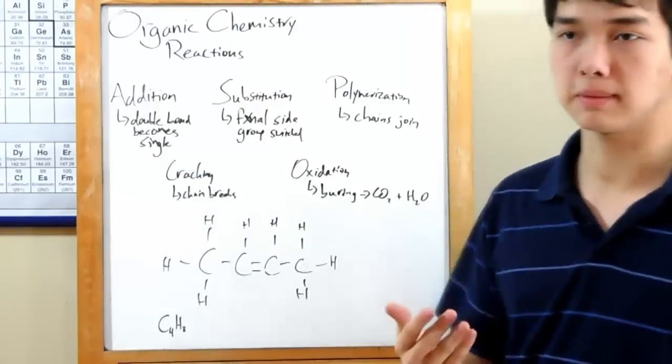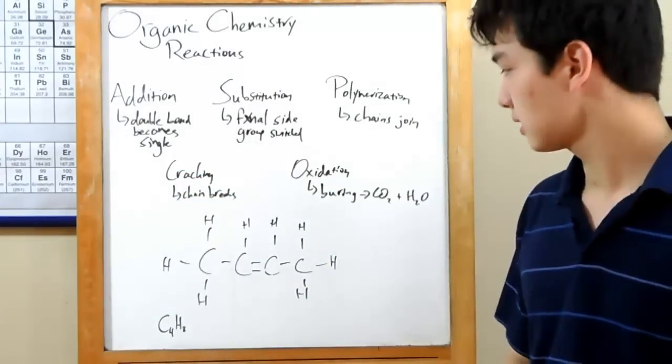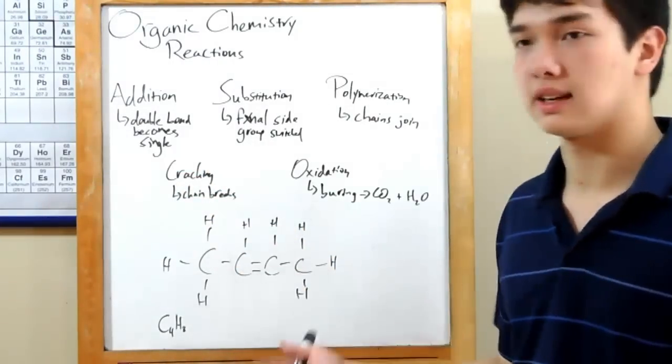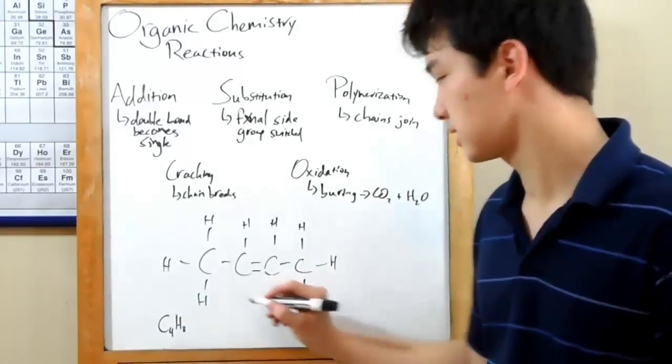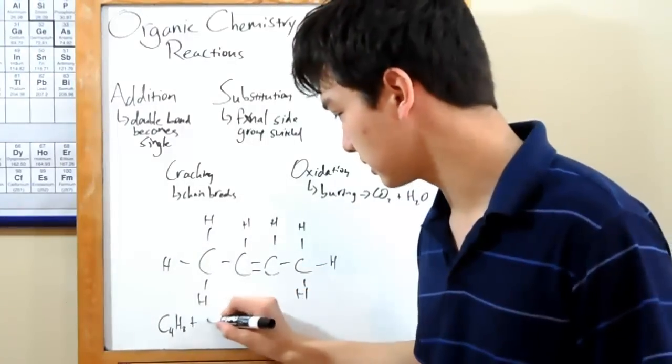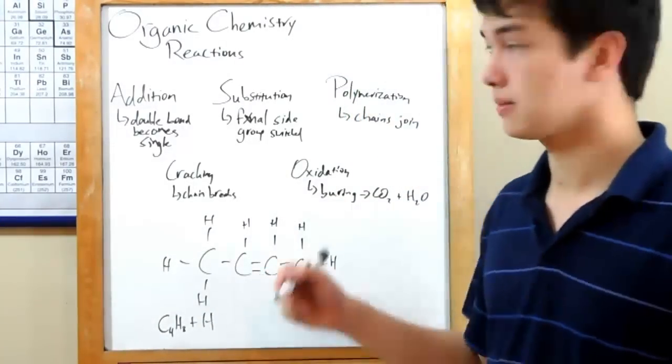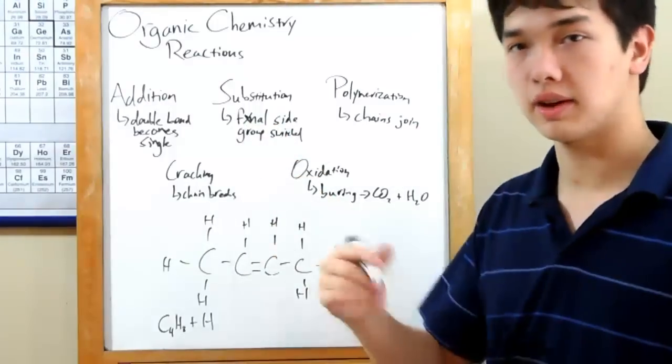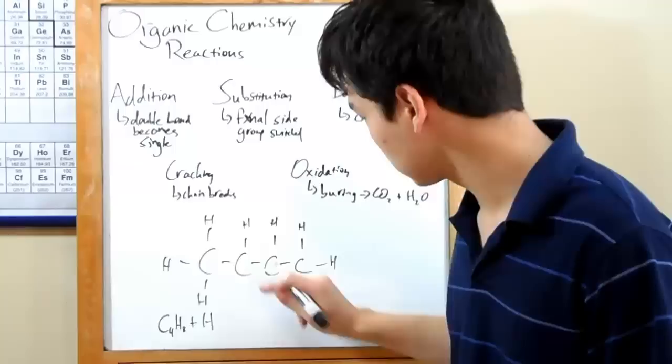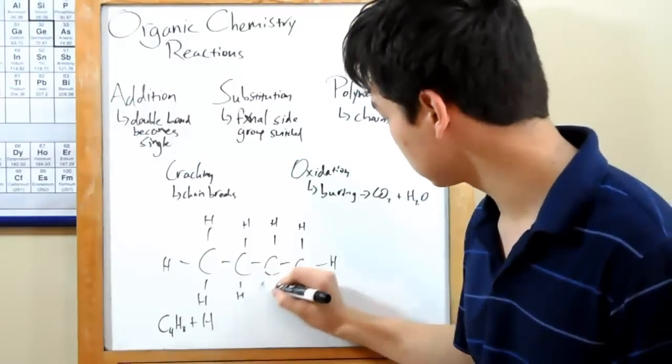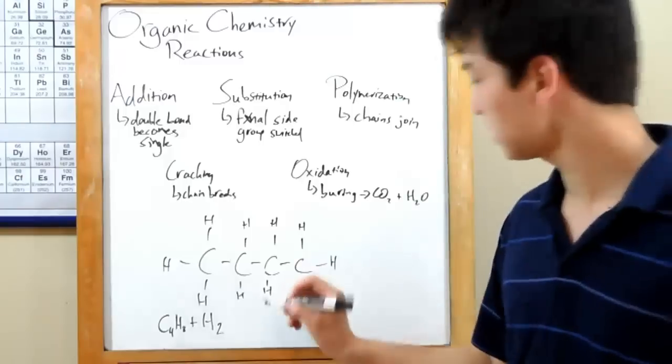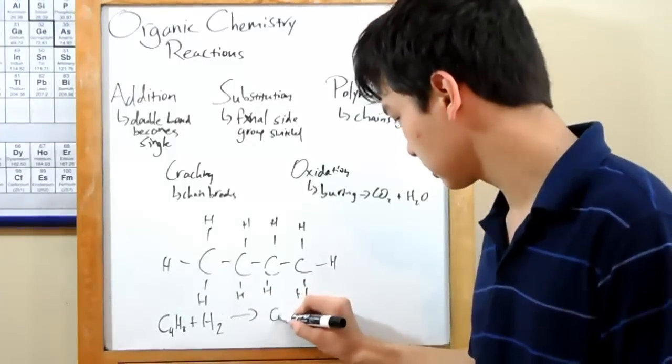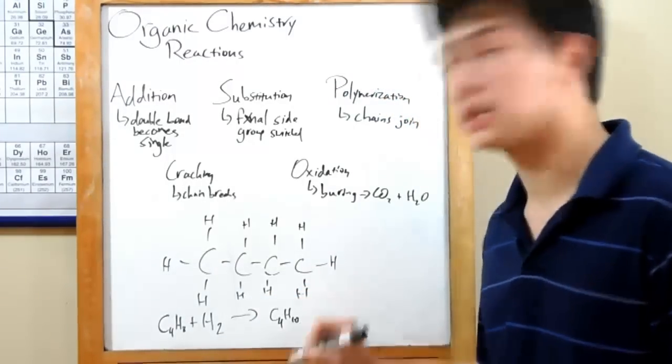The first is an addition. That's when a double bond becomes a single bond. Here we have 2-butene. Let's perform an addition reaction. It's called an addition reaction because whenever you form from a double bond a single bond, you have to put in hydrogens. As we do this, we have two free spaces, and we just put in two hydrogens. So C4H8 plus H2 yielding C4H10, or butane.